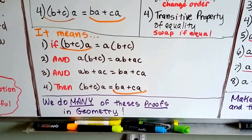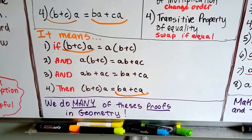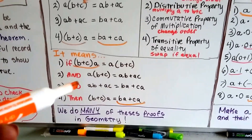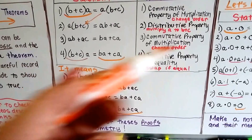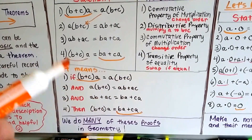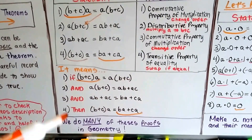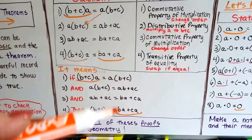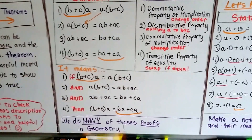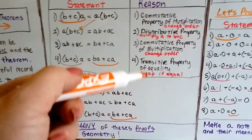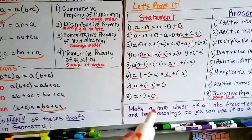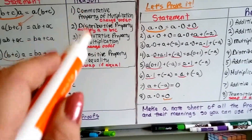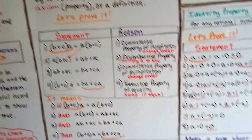We do many of these proofs in geometry, so we're just touching on this a little bit here — we're not going to do many more. After these examples we're going into chapter 3 with equations. The best thing you could do is make a note sheet of all the properties and their meanings so you can use it as a guide and reflect on it quickly.